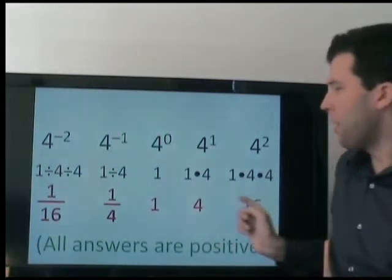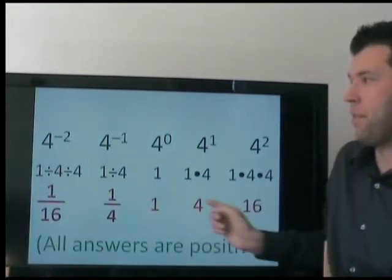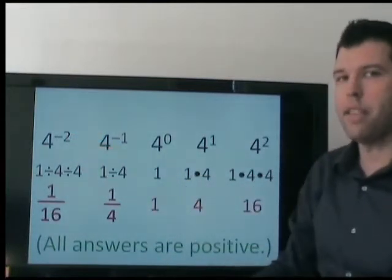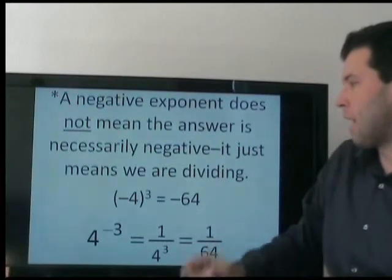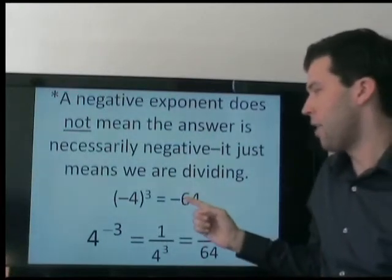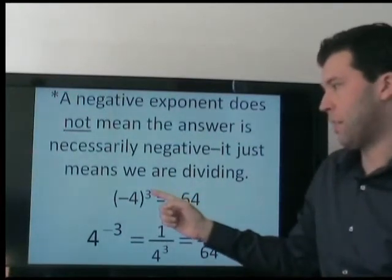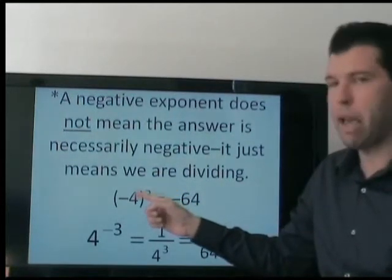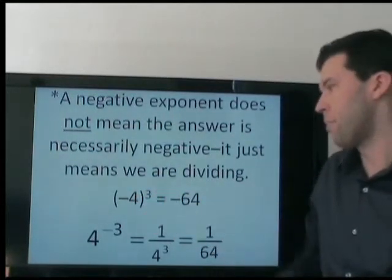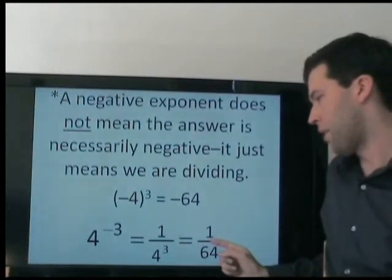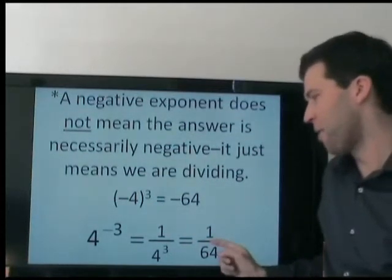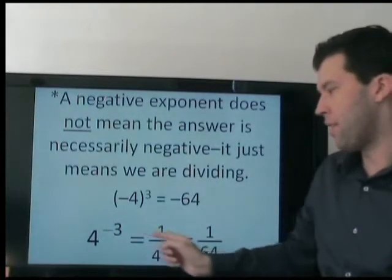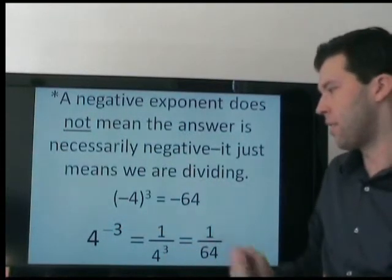I should point out that all of these answers are positive. The negative exponent just means we are dividing, not that the answer is negative. For example, the answer can be negative even though the exponent is positive — that's because we are multiplying a negative base an odd number of times. Here, the answer is positive even though the exponent is negative. Again, a negative exponent just means we are dividing, not that the answer is necessarily negative.